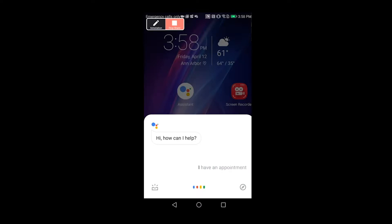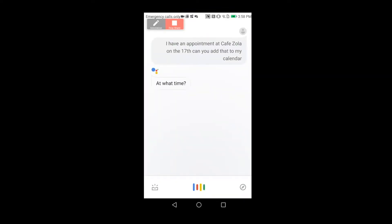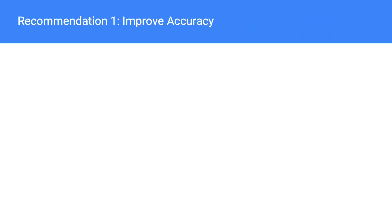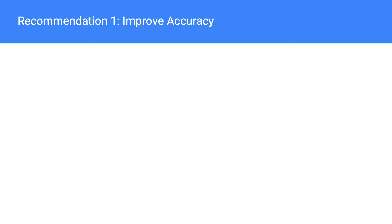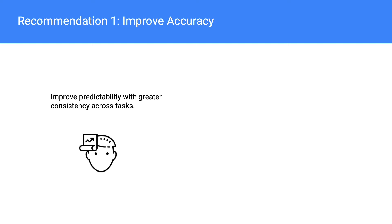For example: 'I have an appointment at Cafe Zola on the 17th. Can you add that to my calendar?' GA responds: 'What time?' User: 'Six o'clock.' GA then misinterprets and asks about Wednesday at 6pm at Cafe Zola. While Google is already working to improve GA's accuracy, we have recommendations. Text on dedicated buttons could educate users on how to word commands correctly — for example, a 'read my notes to me' button that actually triggers that command. Our recommendation is to improve predictability, supporting both step-by-step and single-command input for simple and complex tasks, and prompting users to save calendar events when created within GA.